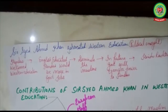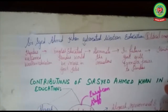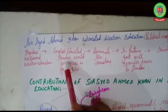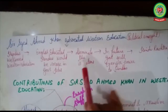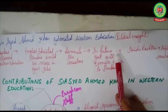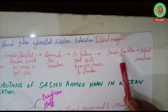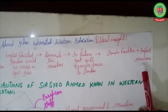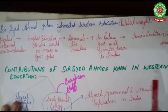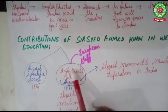Sir Syed Ahmad Khan advocated western education with a political insight as well. He believed that English-educated Hindus would dominate government jobs, and that if the British left India, power would be transferred to Hindu society, resulting in a Hindu Rashtra where Hindus would exploit Muslims. To counter this, he set up the Aligarh Scientific Society in 1864, and then the Anglo-Oriental College at Aligarh in 1875, where most of the staff was European.